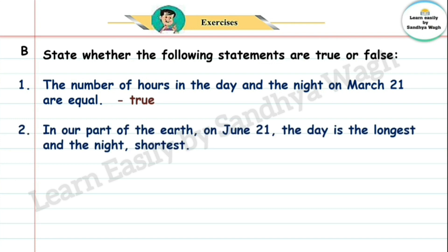2. In a part of the earth, on June 21, the day is the longest and the night shortest. 21 June la sarvat muttha divas Wa sarvat lahan ratras thi. He sentence correct ahi ka. Yes. So, this is true.